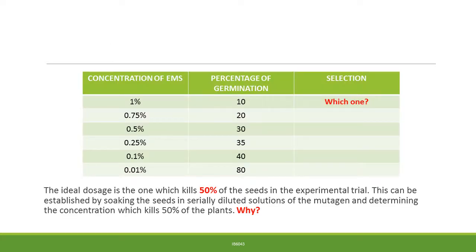The ideal dosage is the one which kills 50% of the seeds in an experimental trial. This can be established by soaking the seeds in serially diluted solutions of the mutagen and determining the concentration which kills 50% of the plants. A strong concentration of mutagen may result in excessive mortality, whereas a low concentration may result in a high survival rate and a low number of mutants. One needs to ascertain the dosage for each species as this varies from plant to plant.